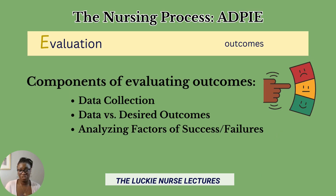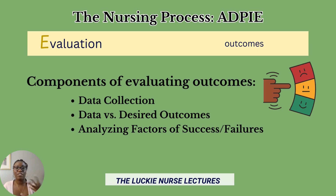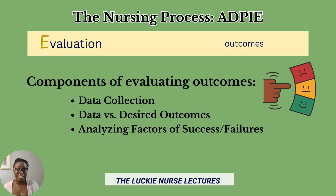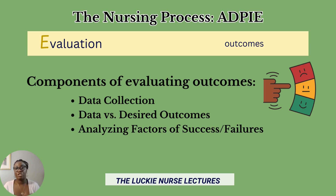The final stage of the nursing process is evaluation, where we assess whether the implemented plan of care actually worked and benefited the patient. Evaluation involves collecting subjective and objective data by doing an assessment, then analyzing that data by comparing it to the desired outcomes from the planning stage. Were the desired outcomes met, exceeded, or not met — and if not met, why? What factors contributed to not meeting patient goals? Just like the planning stage, this is an ongoing process, and collected data is used to adjust the plan of care.